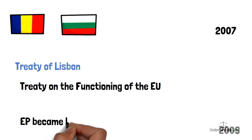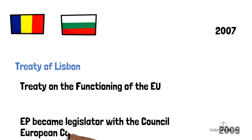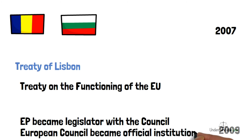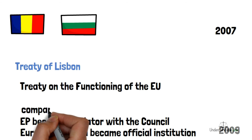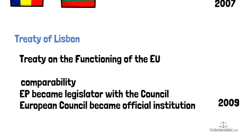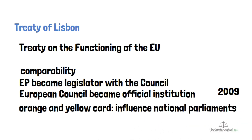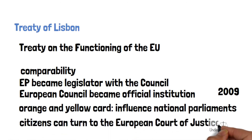Under the Lisbon Treaty, the European Parliament became a co-legislator together with the Council. The European Council became an official institution of the European Union, determining the political direction. Changes were made at the Council of Ministers regarding decision making. The European Union also gained legal personality and can join the ECHR. National Parliaments can show an orange or yellow card to have a little more influence, and citizens can turn to the European Court of Justice.